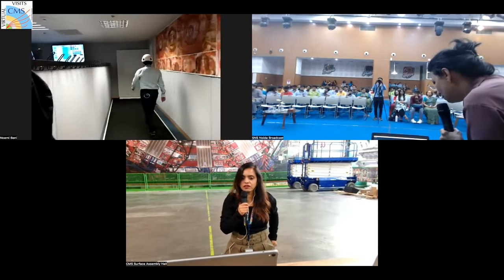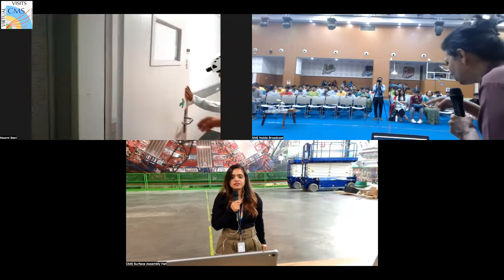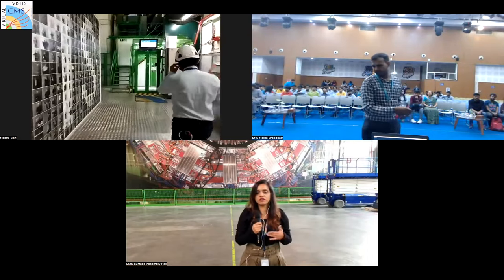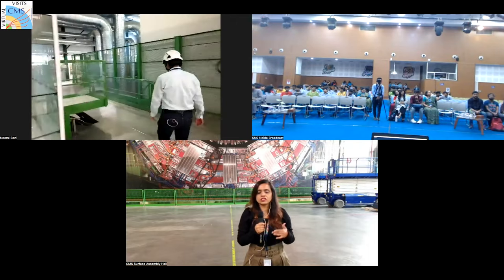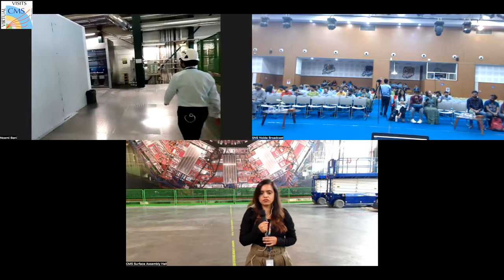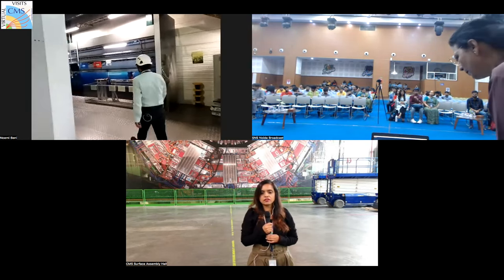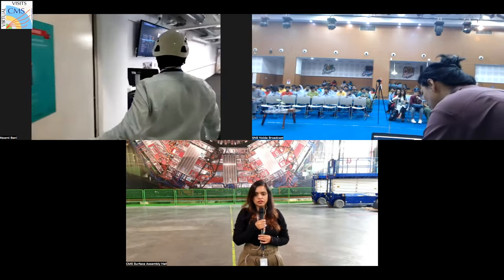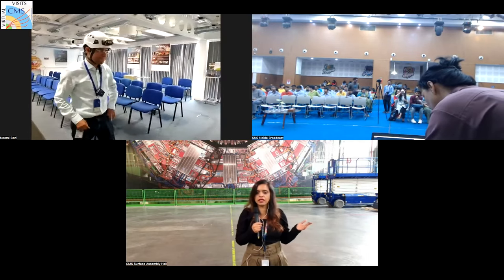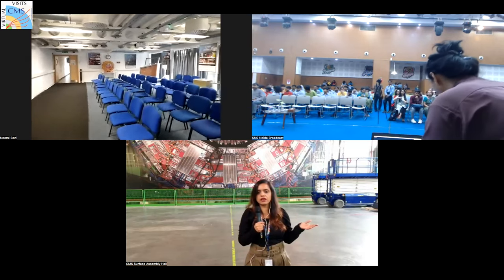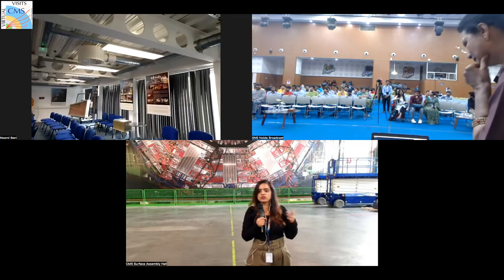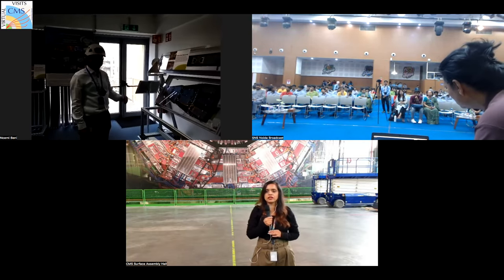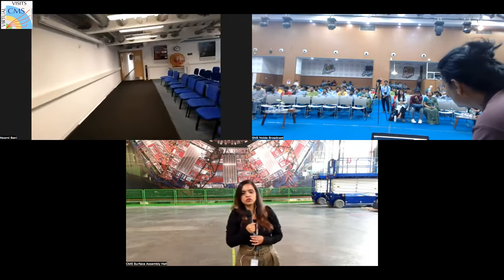Now, talking about the data: how much data do we collect per year, and how do we store such a big amount? CERN has created different tier centers. The lowest level is tier zero, located at CERN, which stores all raw data without any cuts. A copy of this data is then sent to tier one centers — there are seven tier one centers around the world.